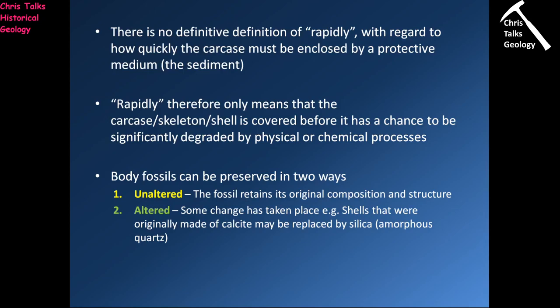We want to rapidly cover the carcass with sediment to protect it. However, there is actually no definition of what 'rapidly' means — there's no set number to it. What it essentially means is that 'rapidly' is defined as the carcass, skeleton or shell being covered before it has a chance to be significantly degraded by physical or chemical processes. We want the body to stay as intact as it possibly can be before being fossilised.